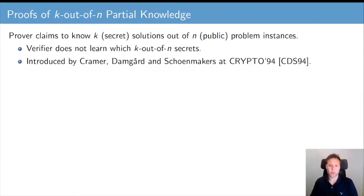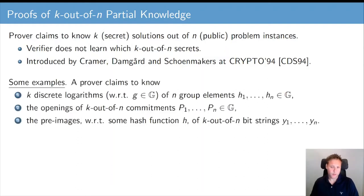In proofs of partial knowledge, a prover claims to know k secret solutions out of n public problem instances. It wishes to convince a verifier that it does, without the verifier learning which k out of n secrets the prover knows. This problem was introduced by Kramer, Damgaard and Schoenmakers at Crypto 94. Some examples are proving knowledge of k out of n discrete logarithms, or proving knowledge of the openings of k out of n commitments, or proving knowledge of k out of n pre-images with respect to some hash function h of bit strings y1 up to yn.